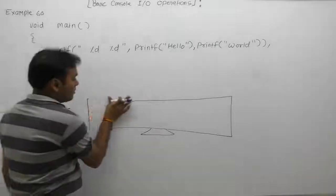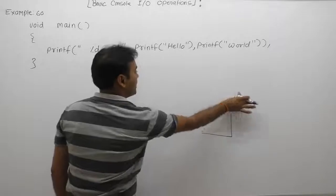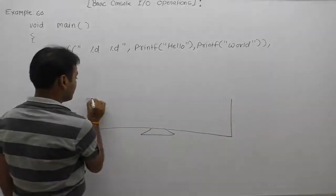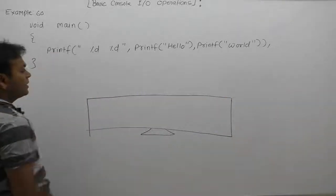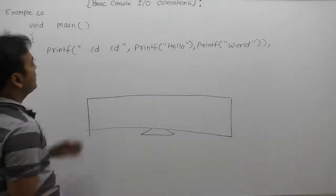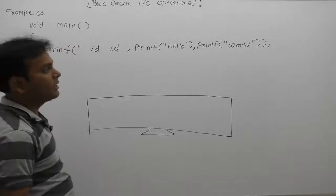Next one, what is the result of current examples? In that case, as we know, we are using printf function in nested form.